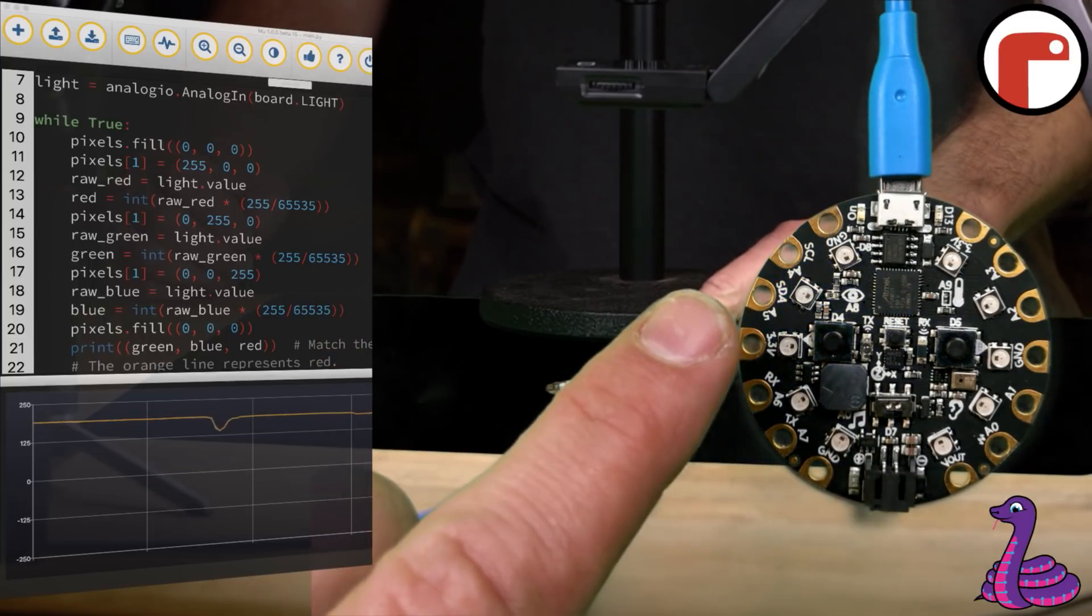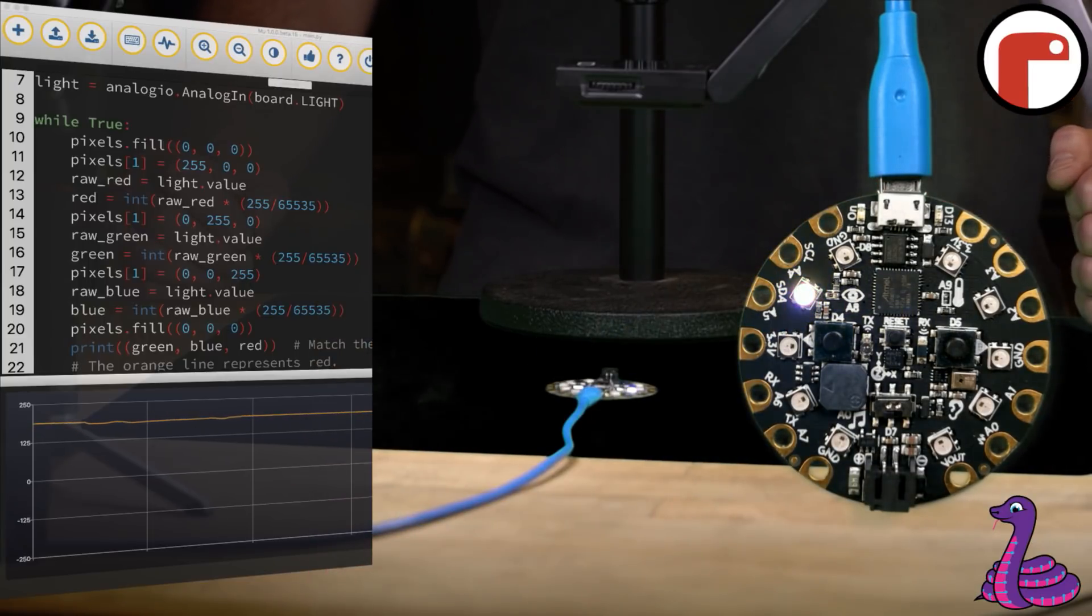By flashing this NeoPixel LED red, green, and then blue, we can detect the amount of each primary light color that gets reflected off of an object and back into the light sensor. Colored objects absorb some frequencies of light and reflect others.